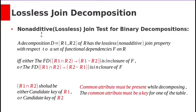Suppose if we decompose relation R into R1 and R2, the decomposition D of R has lossless join property with respect to set of functional dependencies F on original relation R.